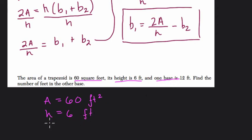And one of the bases is 12 feet. Okay, so I'll say B2, the second base is 12 feet, because I know I've already isolated B1. Find the number of feet in the other base. So it's easiest to find B1 because we have all the other values of the variables.